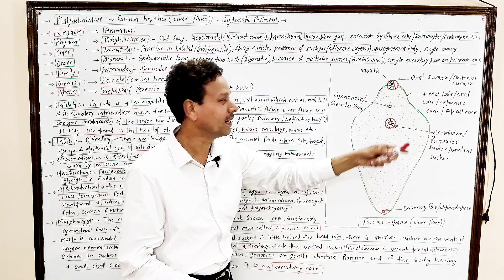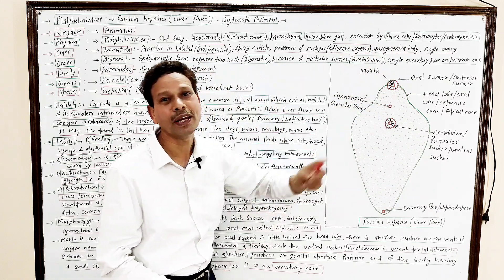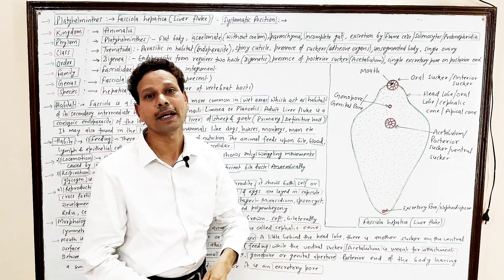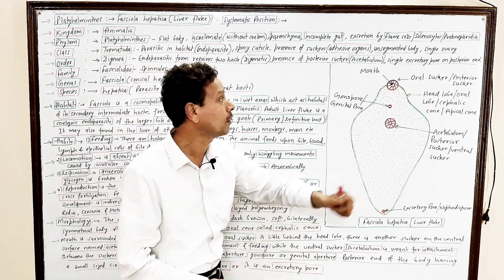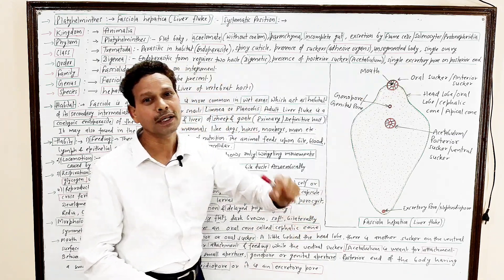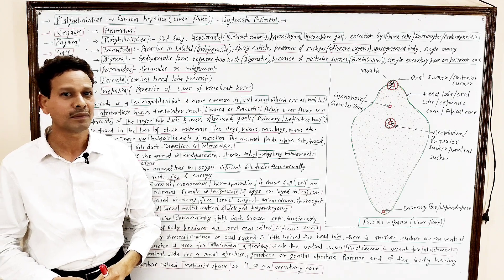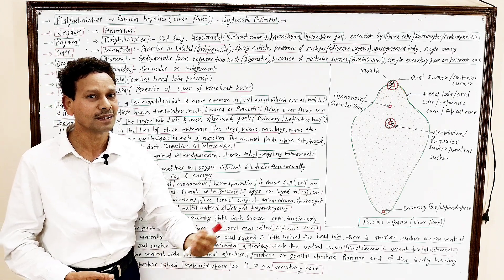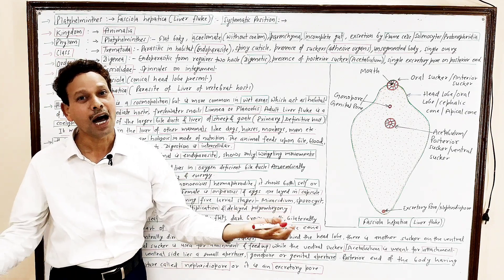Unsegmented body. Dear students, from this diagram very clear, the body remains unsegmented. Flat body, leaf-like body. Single ovary. In the reproductive system, the gonads, the ovary, unpaired. Order.